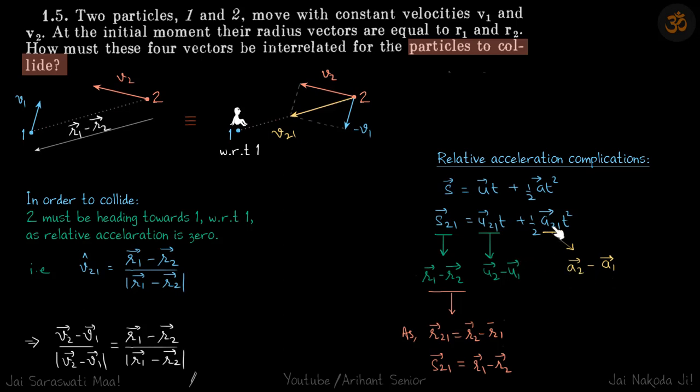In this question, a₂₁ = 0 because both were moving with constant velocities. So a₂ = 0 and a₁ = 0.